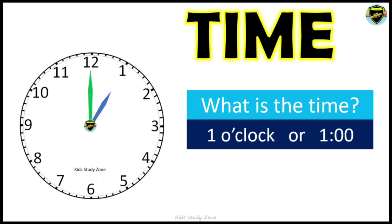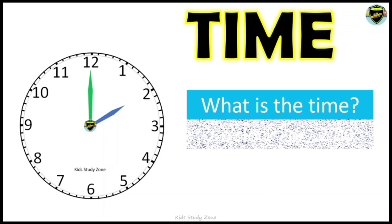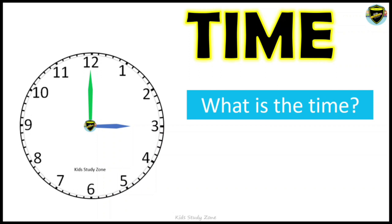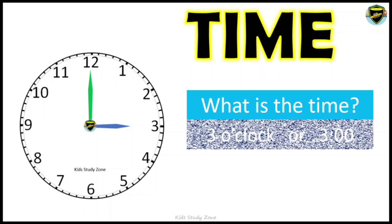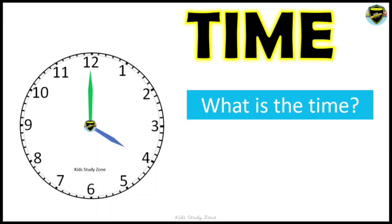We are going to cover from 1 to 12 so you can understand how it looks for every hour. What is the time? The hour hand is pointing towards 2, so it is 2 o'clock. What is the time? The hour hand is pointing towards 3 — it makes a proper L shape — so this is 3 o'clock.